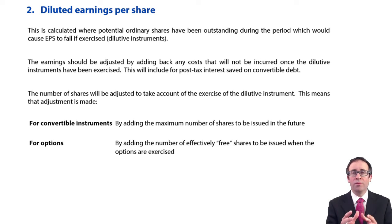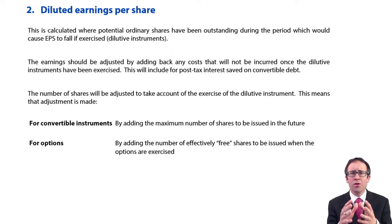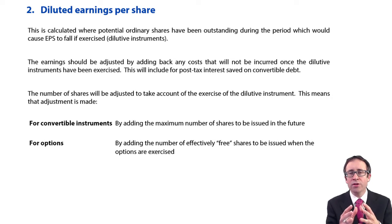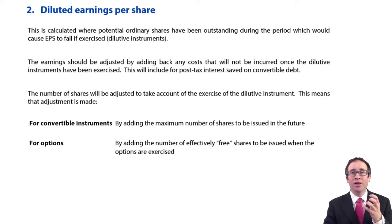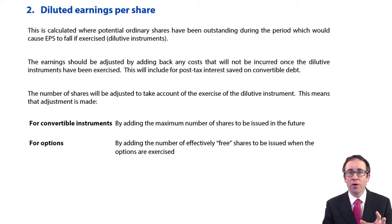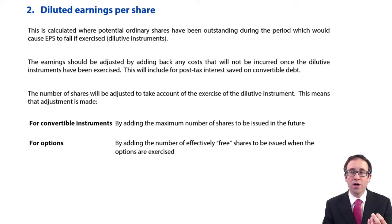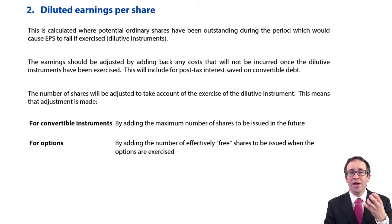At the end of the reporting period, there could be items within your financial statements that, when future events happen, will change the earnings and will change the number of shares. What we're going to look at here is what dilutes — that is, reduces — your earnings per share, which is effectively an increase in the number of shares at some point in the future.